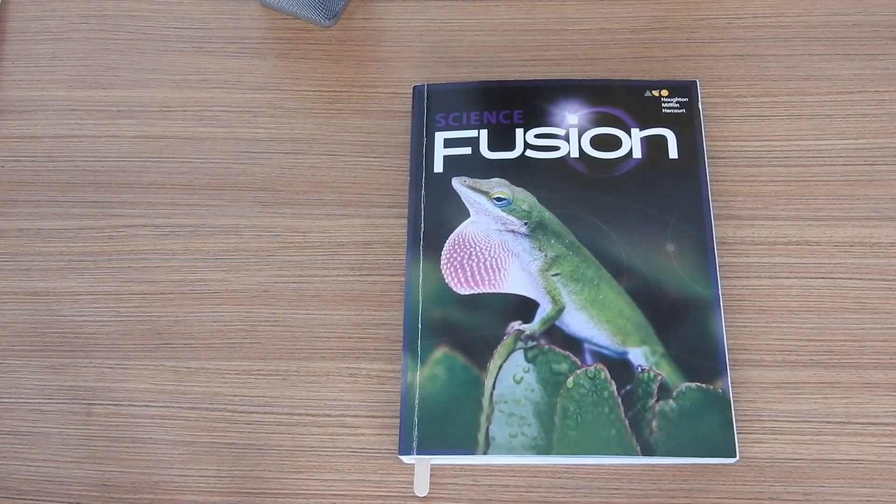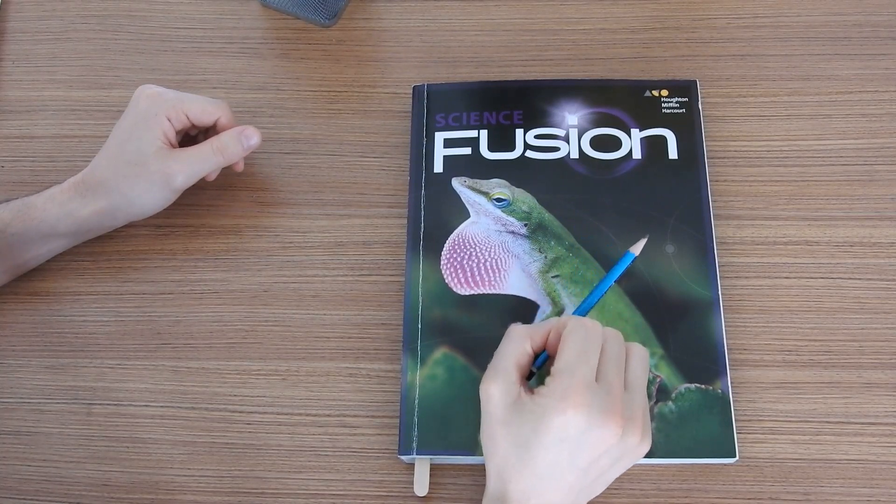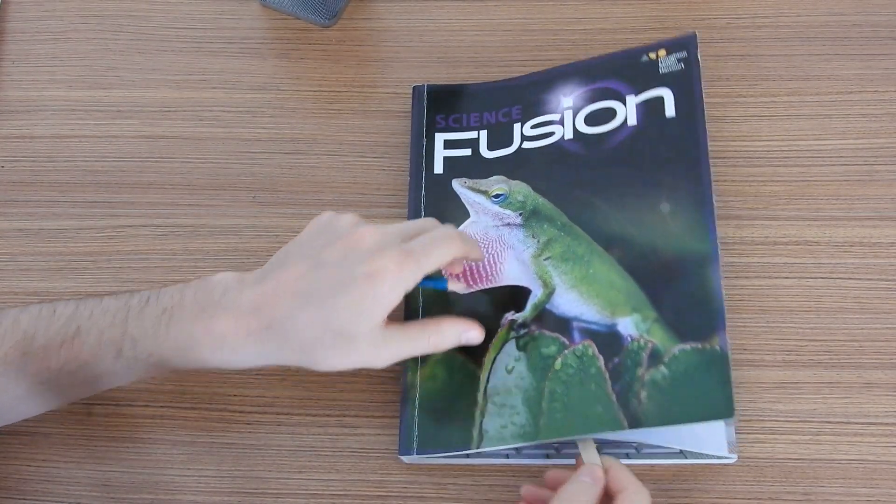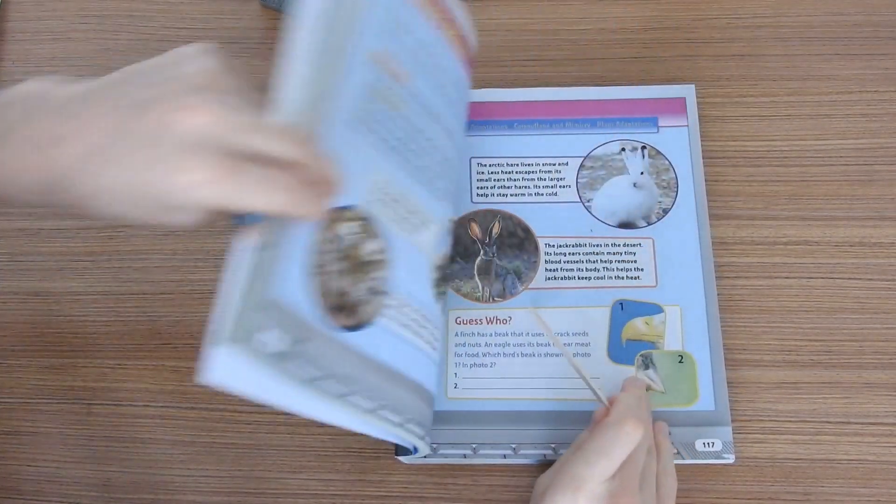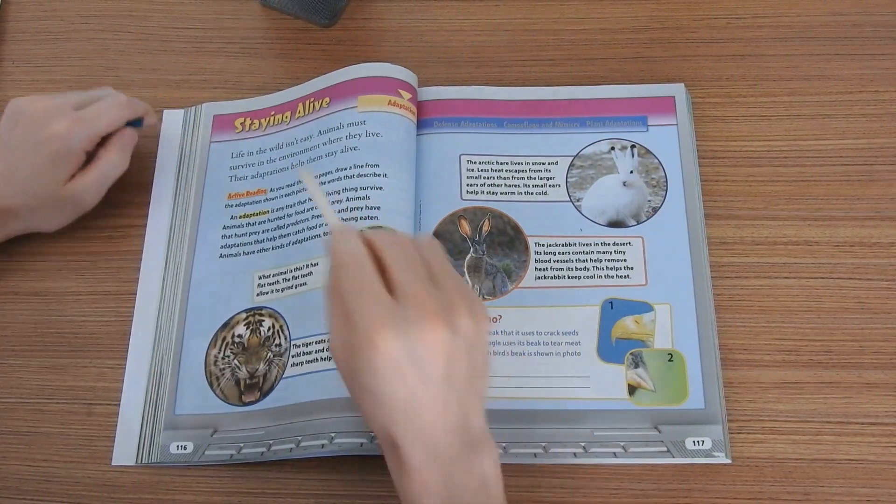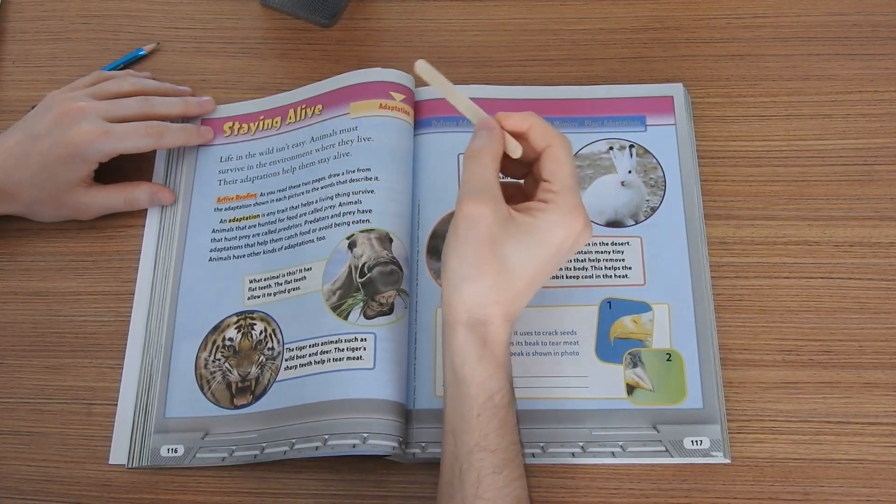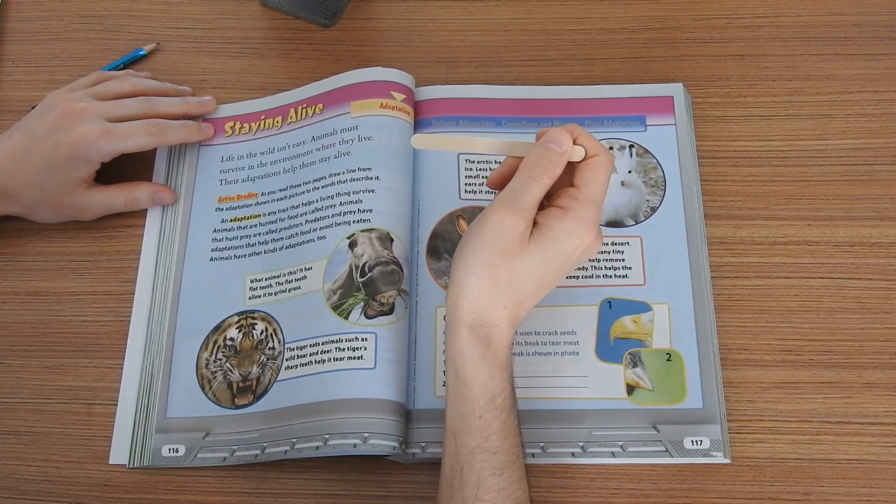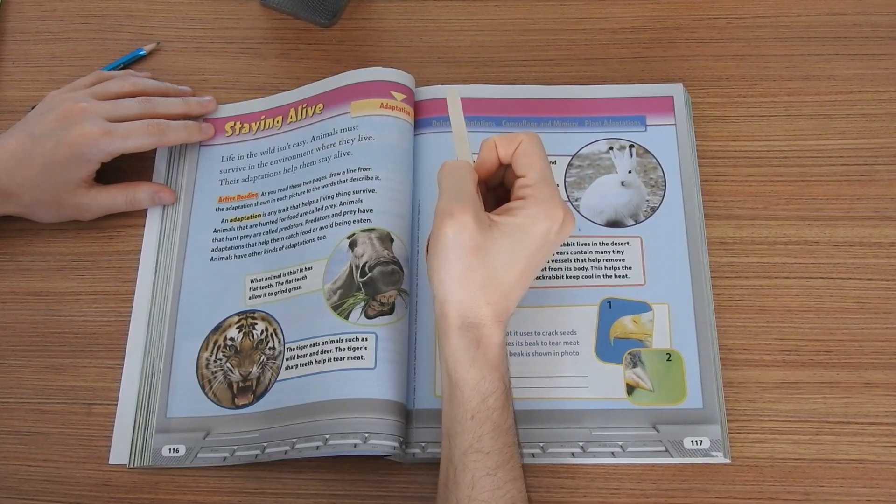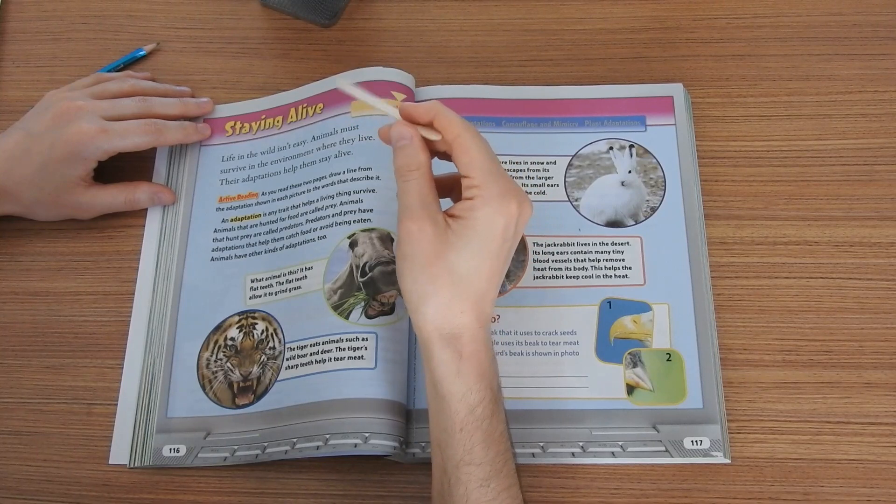Hello everyone! Here we have the Science Fusion book of grade 3 and we are opening to page 116 under the title Staying Alive. So here I will read the text and we will look at some of the terms here that we need to know. Let me start reading first.